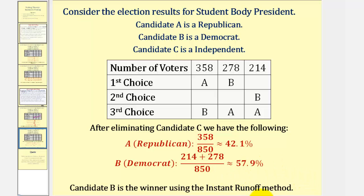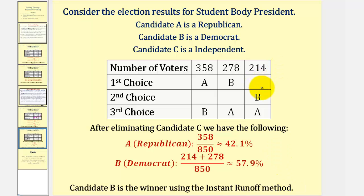But notice at the same time, we've discovered one of the issues with the instant runoff method. It is possible for the winner of the instant runoff method to violate the Condorcet criterion, because remember the Condorcet winner was candidate C, who was eliminated using the instant runoff method. We'll take a look at the instant runoff method in more detail in the next lesson. I hope you found this helpful.